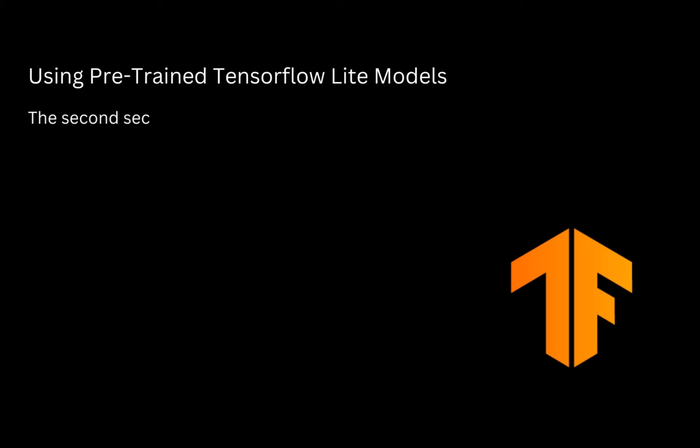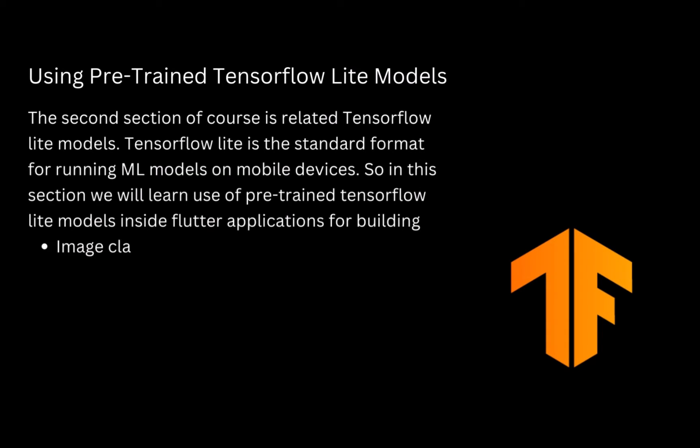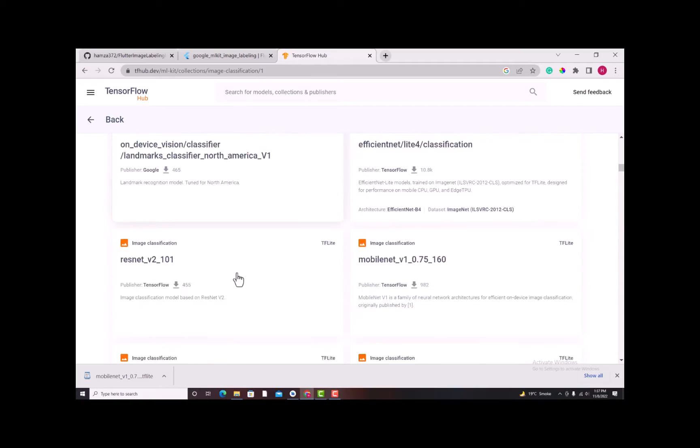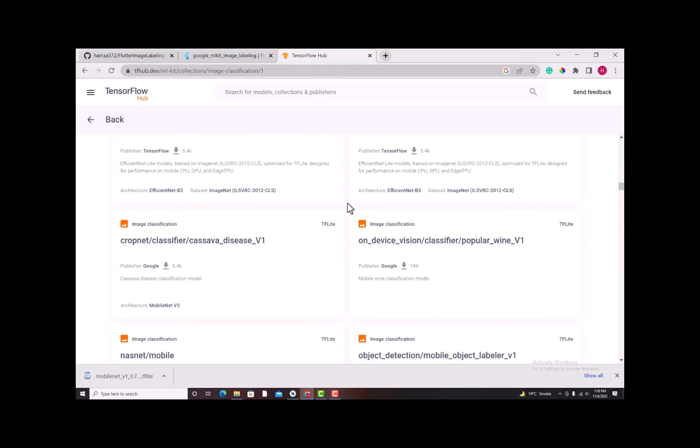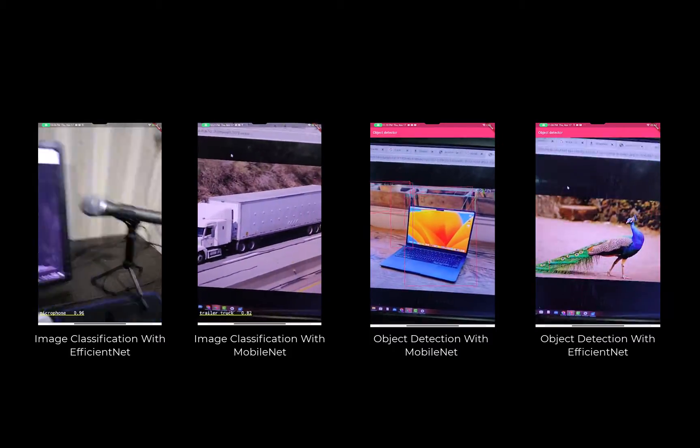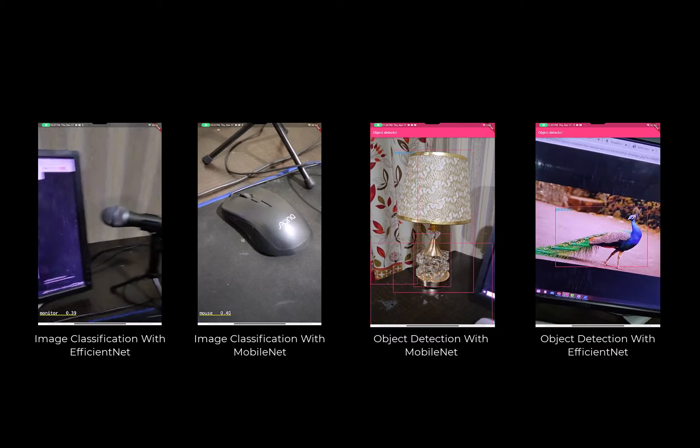The second section of this course is about TensorFlow Lite models. TensorFlow Lite is a standard format for running machine learning models on mobile devices. In this section, we will learn to use some existing TensorFlow Lite models inside our Flutter application. We are going to explore and download a number of ready-to-use models and use them inside our Flutter applications for performing image classification and object detection.